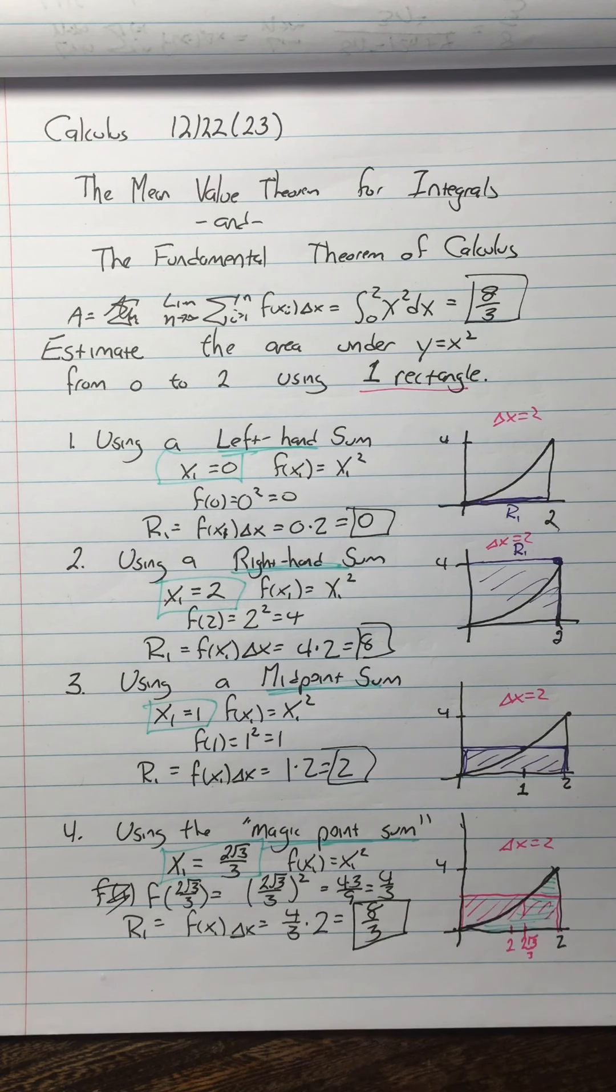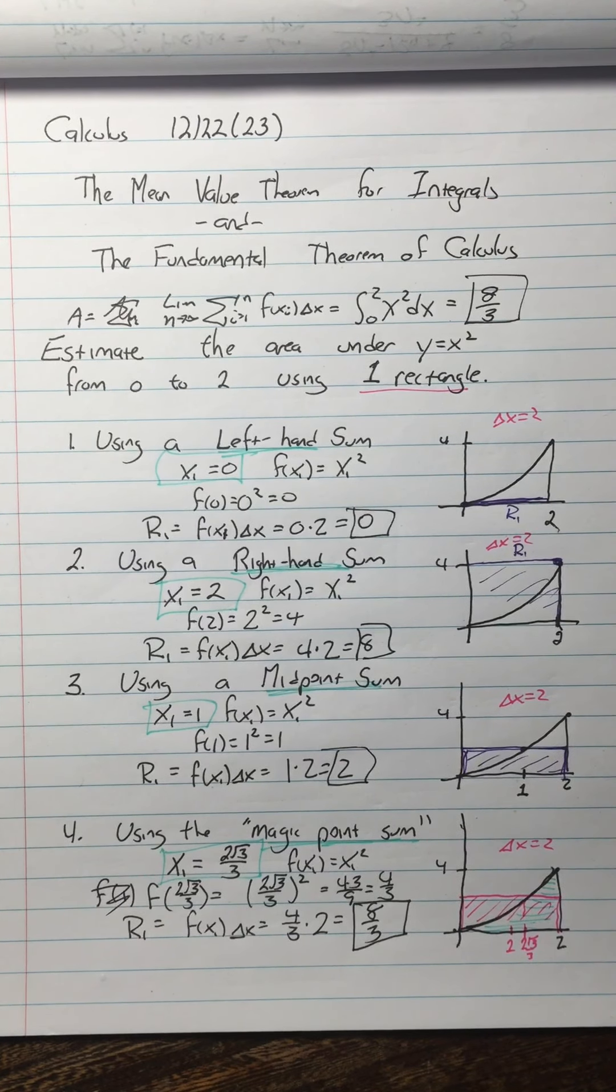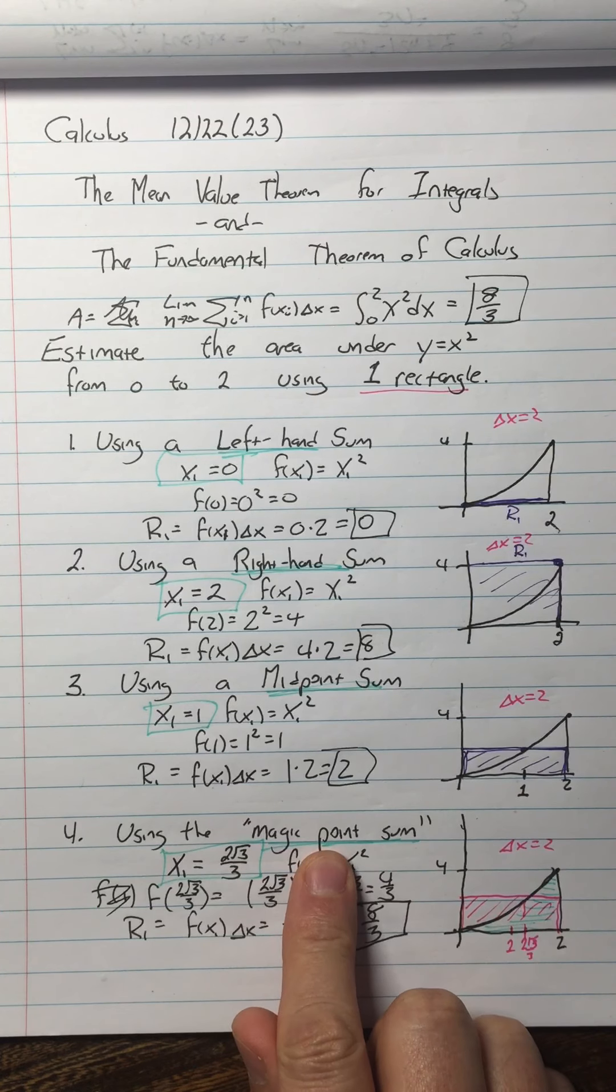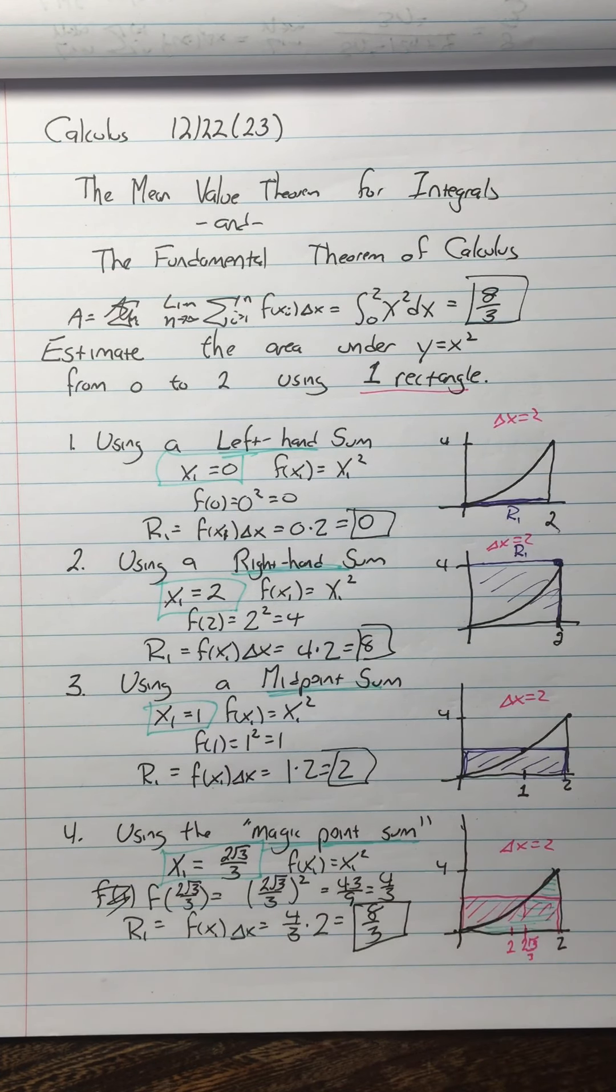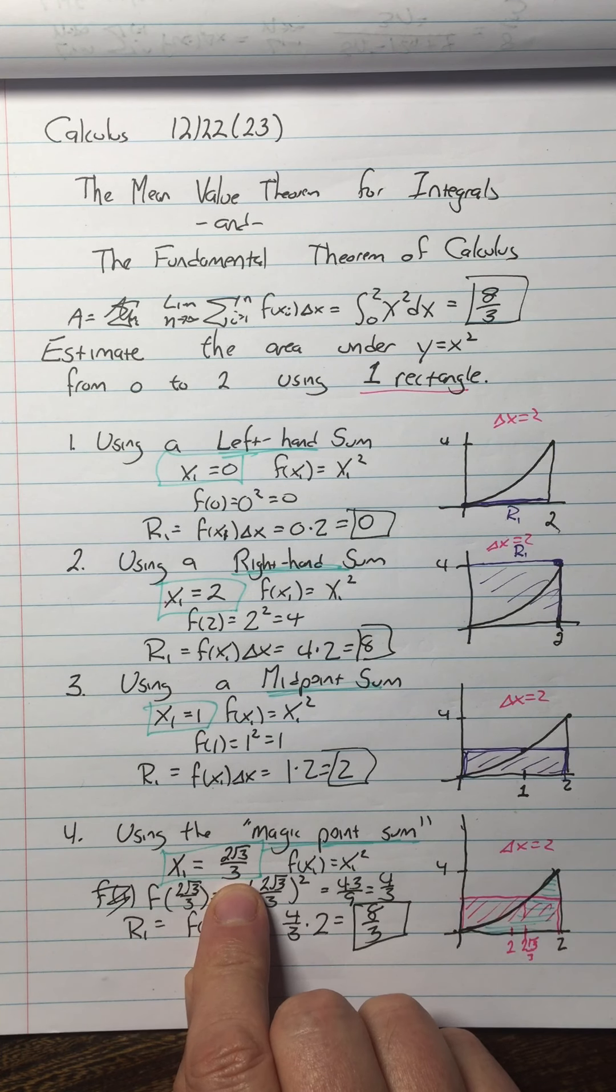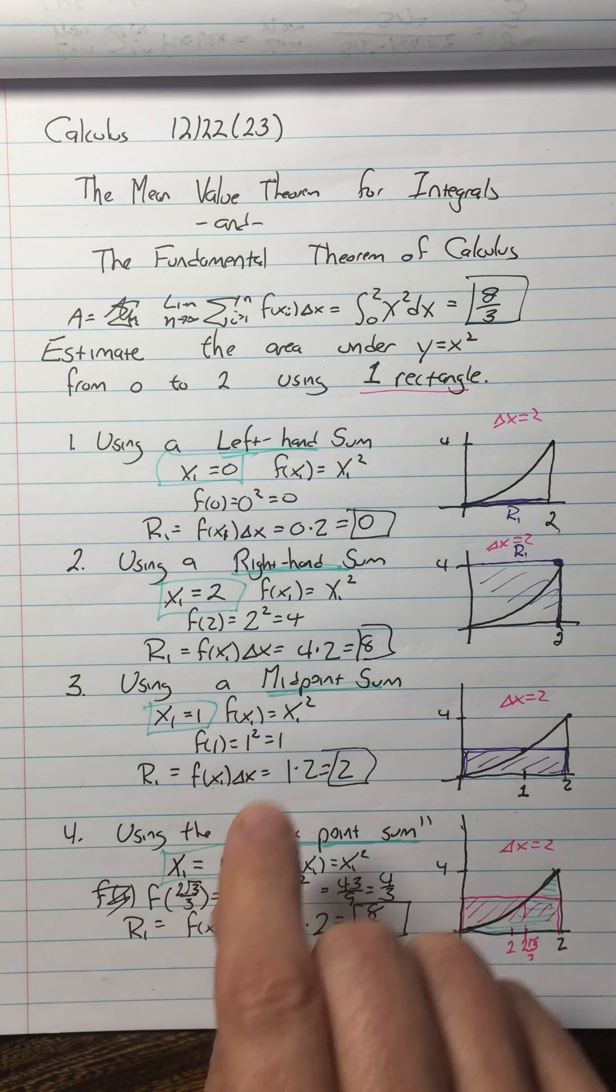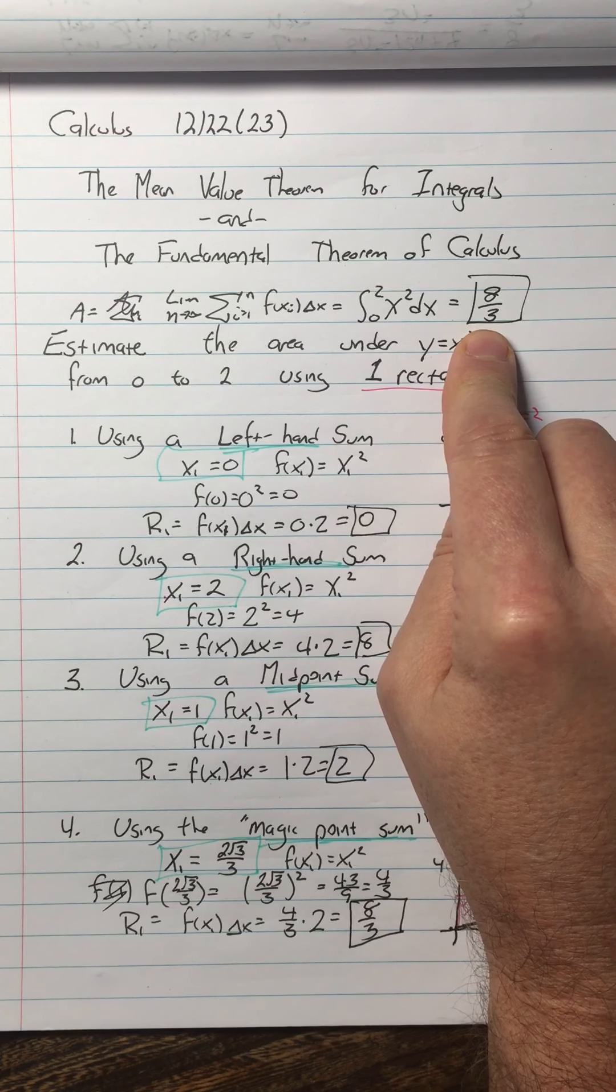Now, what we're going to start taking advantage of is that there is always a magic point where you could use one rectangle to get the entire area. So why don't we just do that? Because you don't know where the magic point is. How did I know to use 2 square root 3 over 3?